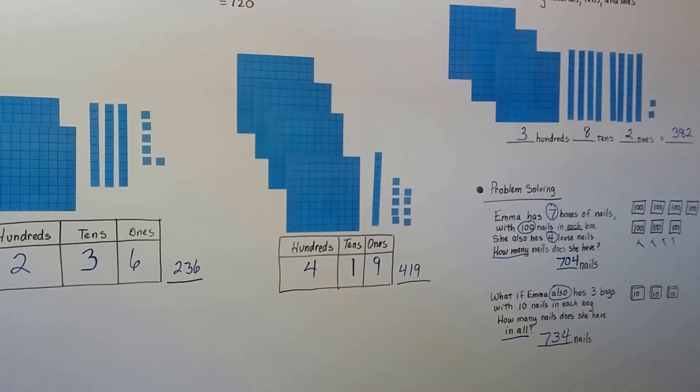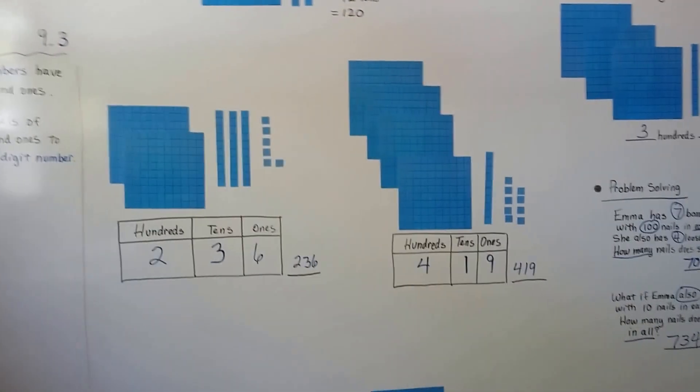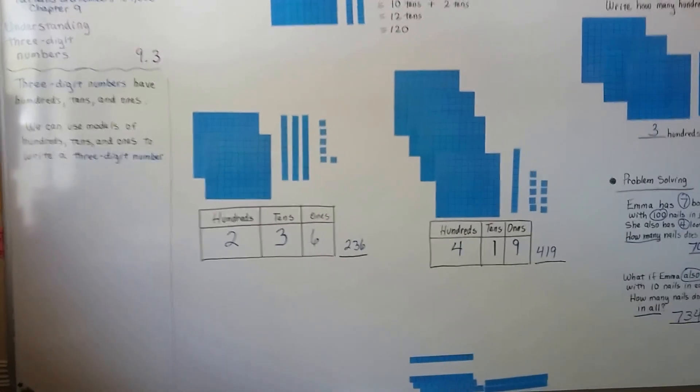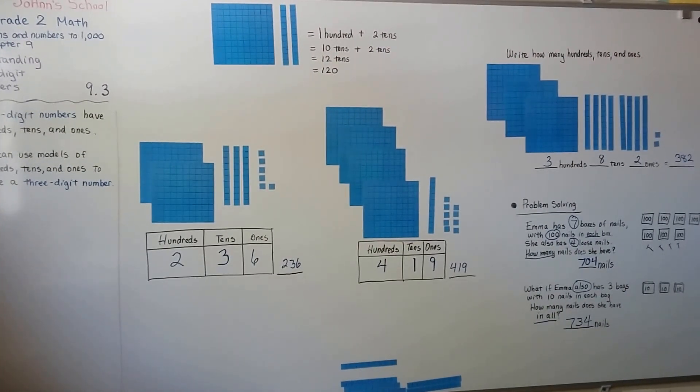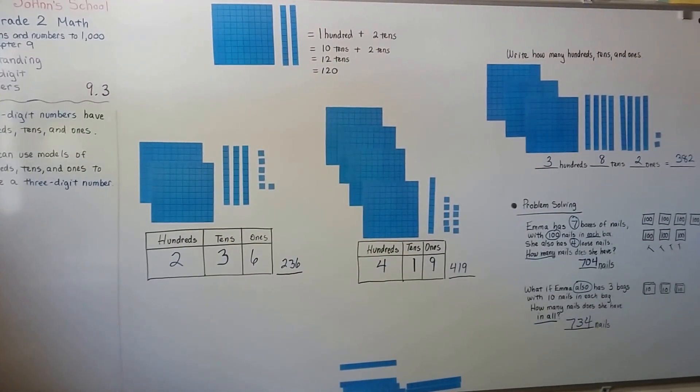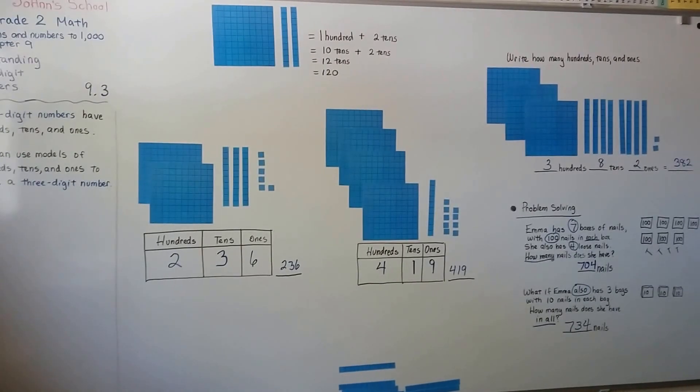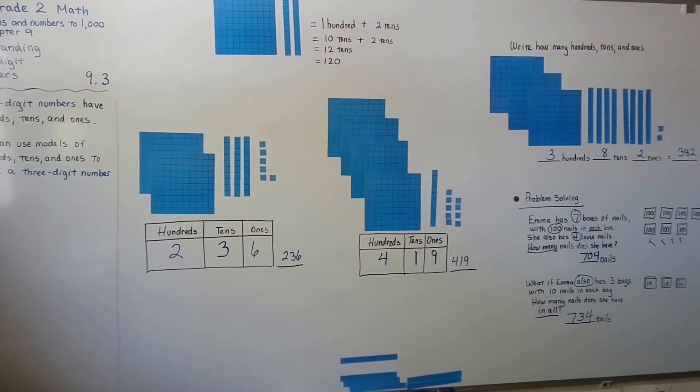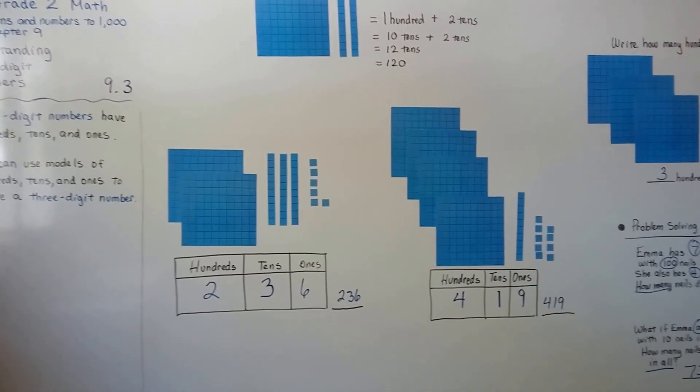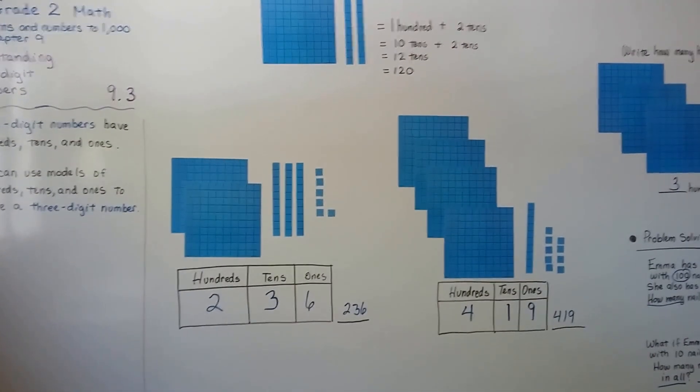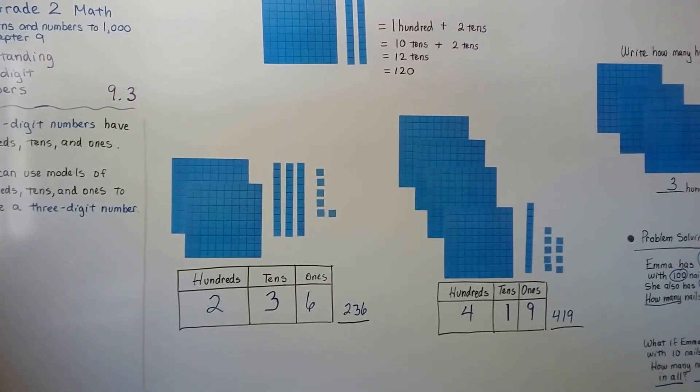All right, so that's understanding three-digit numbers, and we're going to continue on. We're going to talk about more three-digit numbers, and we're going to write them in word form, and we're going to expand them, and we're going to understand how big they are. Okay, I hope I'll see you there. Bye.